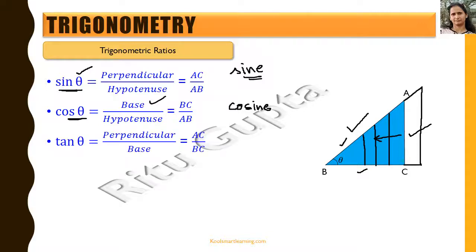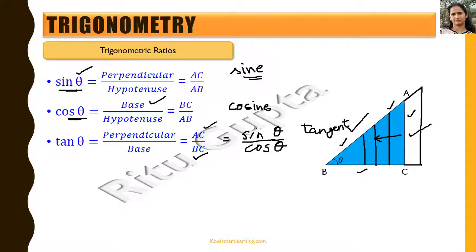Tan theta is nothing but sin theta divided by cos theta, and it is defined as perpendicular upon base — AC being the perpendicular and BC being the base. The full form of tan is tangent. Again, if we change AC or BC, the other side reduces in the same proportion so the ratio does not change. This follows from the basic proportionality theorem: if a line is drawn parallel to one side, the ratio of the sides remains equal.